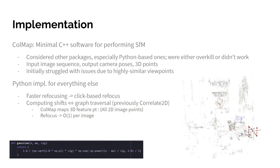For my implementation, I used a library called COLMAP. I considered some others, especially Python-based ones for easier integration, but they didn't work out. COLMAP takes an image sequence and outputs a set of 3D points and camera poses. A screenshot of COLMAP's output is on the right — you can see my N-shaped camera pose path recovered quite accurately. Everything else was implemented in Python, as in previous assignments.